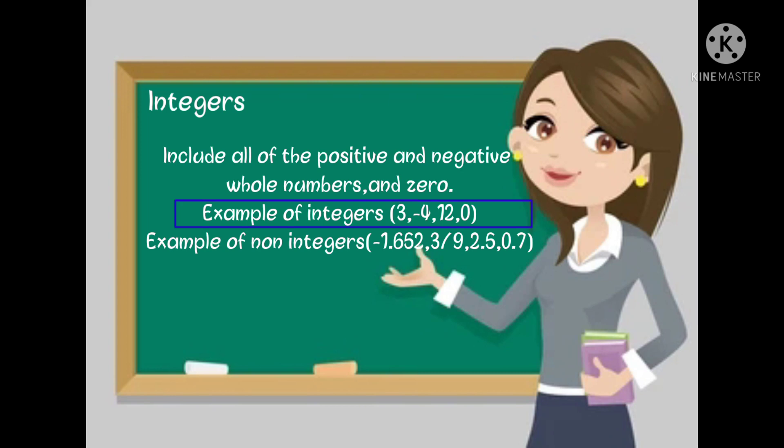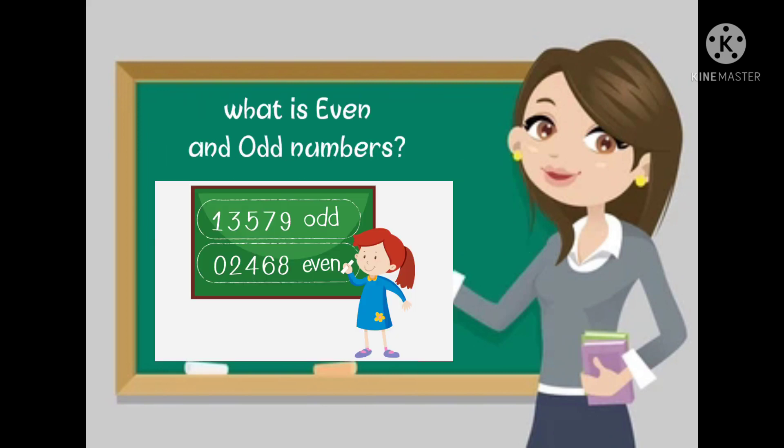An example of non-integers: -1.652, 3/9, 2.5, and 0.7.